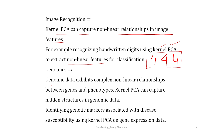In genomics, genomic data also exhibits complex non-linear relationships — often quite complex — and there is a non-linear hidden structure to identify. For instance, the relationships between genes and phenotypes. Kernel PCA can capture hidden structures in genomic data, or your objective may be to identify genetic markers associated with a particular disease.